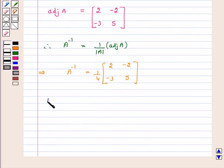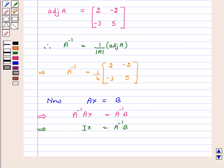Now AX is equal to B implies A inverse AX is equal to A inverse B by pre-multiplication by A inverse. This implies IX is equal to A inverse B, which implies X is equal to A inverse B.